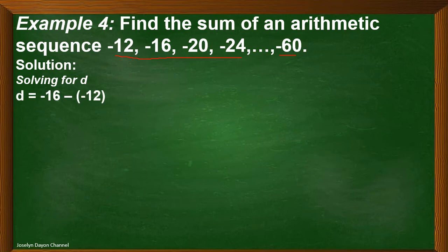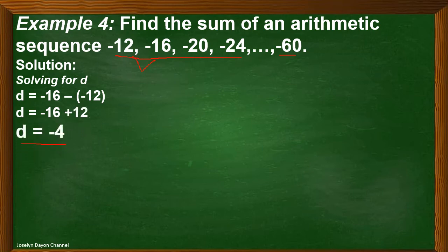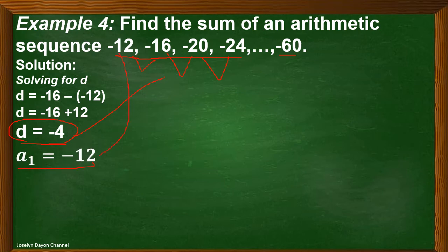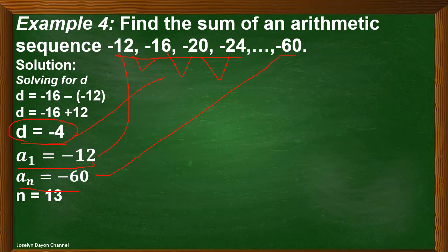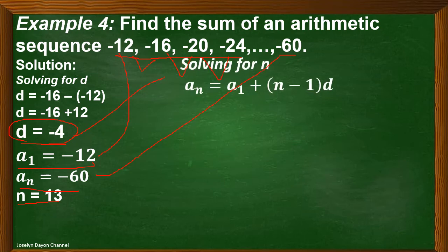So we have negative 16 minus negative 12, which equals negative 4. You can also check: negative 20 minus negative 16, or negative 24 minus negative 20 — the common difference is negative 4. Our first term is negative 12. A sub n, or the last term, is negative 60. Now, how did we get n equals 13? Here is the solution for solving n.